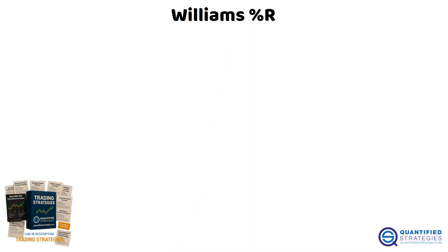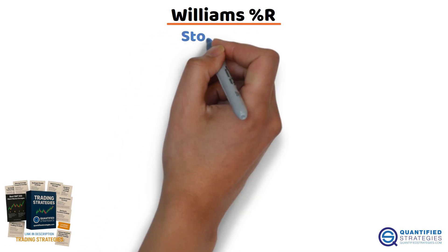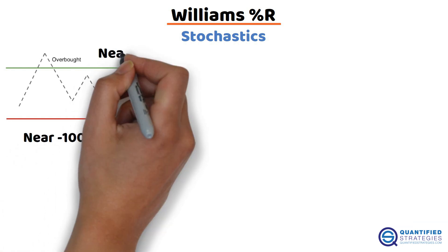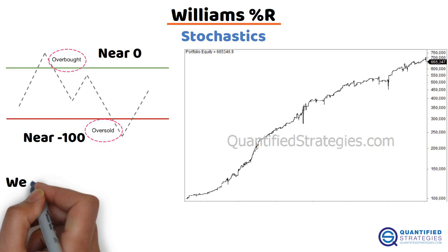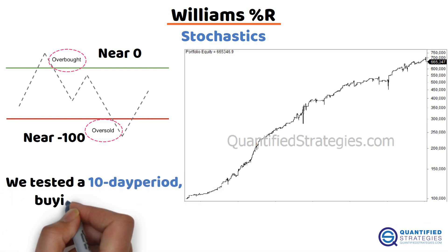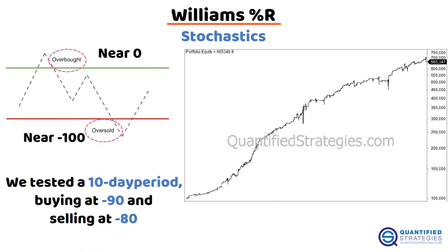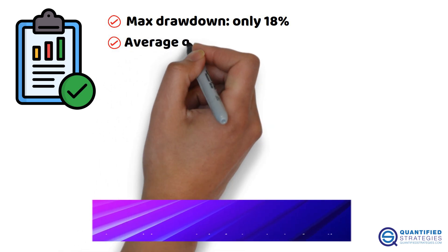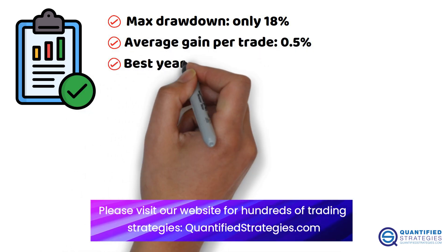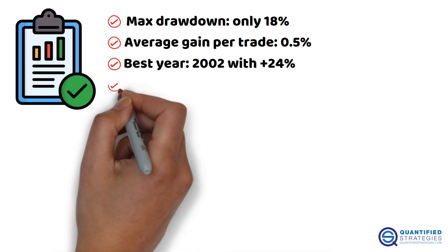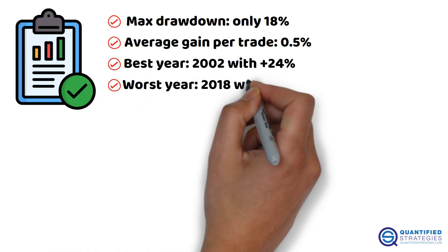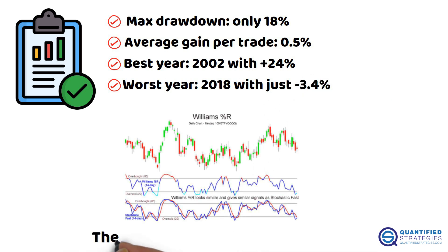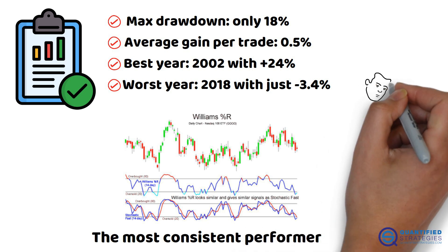And now our favorite: Williams %R. This one works like Stochastics — readings near negative 100 suggest oversold levels, while near zero suggests overbought. We tested a 10-day period, buying at minus 90 and selling at minus 80. The results: max drawdown only 18%, average gain per trade 0.5%, best year 2002 with plus 24%, worst year 2018 with just minus 3.4%. Williams %R came out as the most consistent performer, making it our top pick for technical traders.